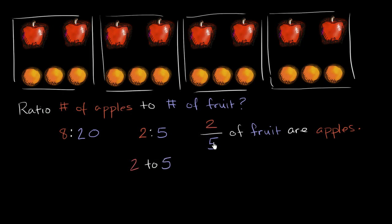Or we could say it's two-fifths, the fraction two-fifths, which would sometimes be read as two to five. This is also, when it's written this way, you could also read that as a ratio depending on the context. In a sentence like this, I would read this as two-fifths of the fruit are apples.